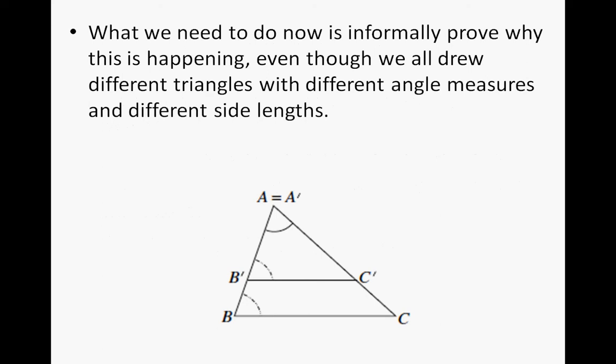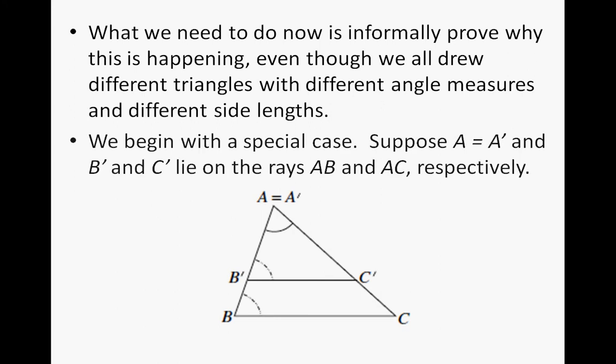What we need to do now is formally prove why this is happening, even though we all drew different triangles with different angle measures and different side lengths. If you notice, we have two triangles, one on top of the other. They share an equal point. They also kind of simulate a dilation of one triangle to another triangle.